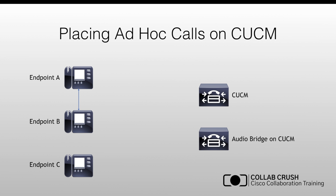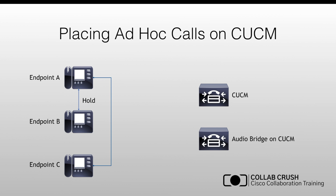However, if A decides during the conversation to bring C in, there's a conference button on the phone that can be pressed. That will put B on hold and allow A to set up a new call leg to endpoint C. The media will then be direct between A and C. Even though it looks like two calls are going on, there's only one because A and B are on hold with no media being sent between them.